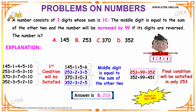So 253 and 352 satisfy the second condition and are taken forward to the third condition: if the number is increased by 99, the digits are reversed. 253 + 99 = 352, which is indeed the reverse of 253 — condition satisfied. But 352 + 99 = 451, which is not the reverse of 352. Hence, 253 is the only number satisfying all three conditions. 253, that is option B, is your answer.